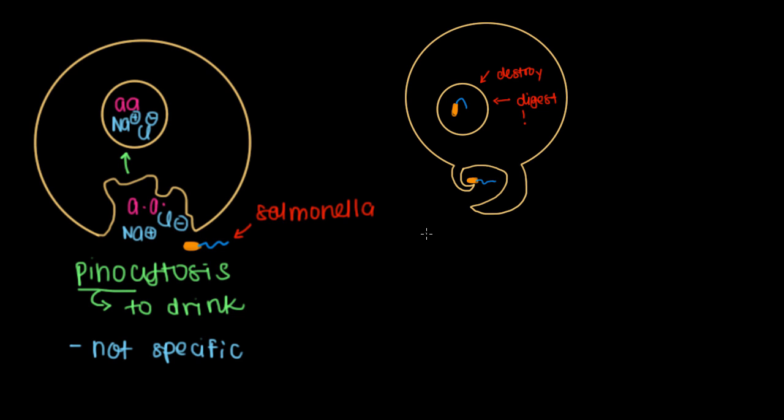This process where the cell literally swallows the pathogen alive is called phagocytosis. Phagocytosis, where cite means cell again, and phago instead of drink means to eat. So the cell is actually going to eat our pathogens. This process is more specific than pinocytosis but still generalizable to foreign pathogens, so it's less specific than receptor-mediated endocytosis.